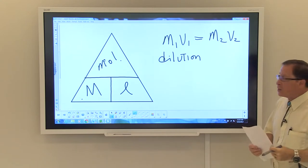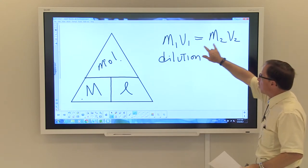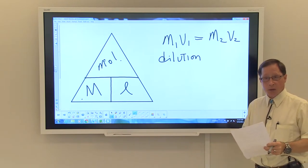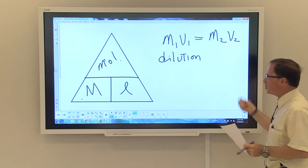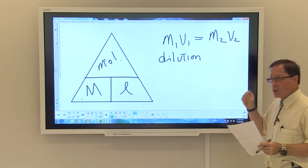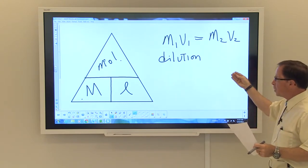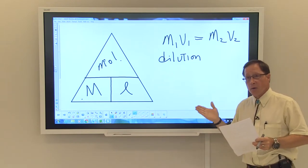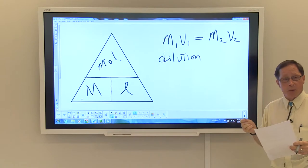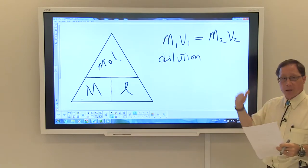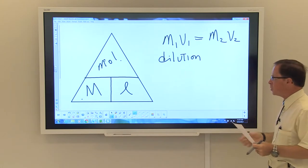And the equation listed here, M1V1 equals M2V2, is known as the dilution equation. And this equation is used only in instances where you are diluting a material into something that is more dilute, but you can also use it in another direction to determine the amount of a concentrated solution that's needed to form a large quantity of the diluted solution.